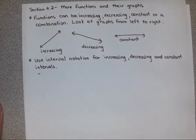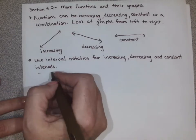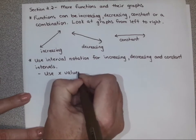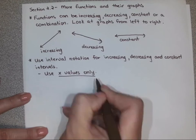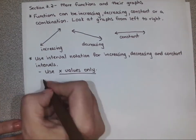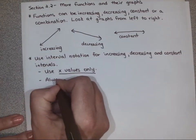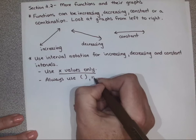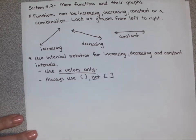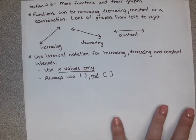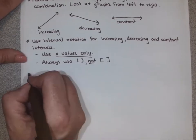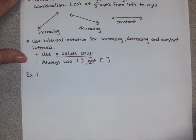A couple of things to use as a guide. First, when we're doing interval notation for increasing and decreasing, you only care about the x values. Number two, we're always going to use parentheses, never brackets, and we're going to talk about why when we look at some examples. With domain and range you have to decide between brackets and parentheses, but you don't have to worry about that with increasing and decreasing.